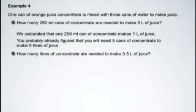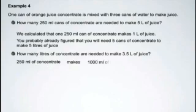So how many liters of concentrate are needed to make 3.5 liters of juice? Now again, even if you kind of have the number and you know, we have to be careful in this case because there are a couple of different things happening that we need to be aware of. So I am going to start it and use proportions and set up some ratios. So 250 milliliters of concentrate makes 1,000 milliliters of juice. That's the result from example three.